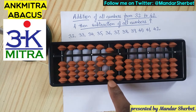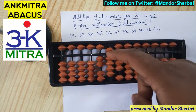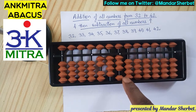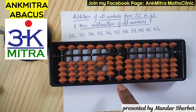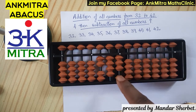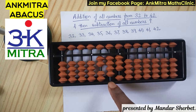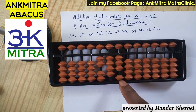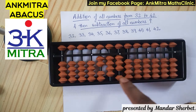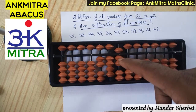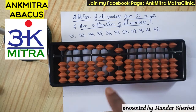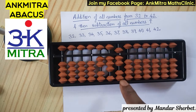Next is minus 36. For minus 3 on the tens place, use the small friend formula — plus 2 minus 5. For subtracting 6 on the units place, use the combination formula: add the big friend of 6, which is 4, then minus 10 on this rod. To add 4 here we don't have four beads, so we use the small friend formula of 4 — plus 5 minus 1 — then minus 10 to finish. Minus 36 is done.